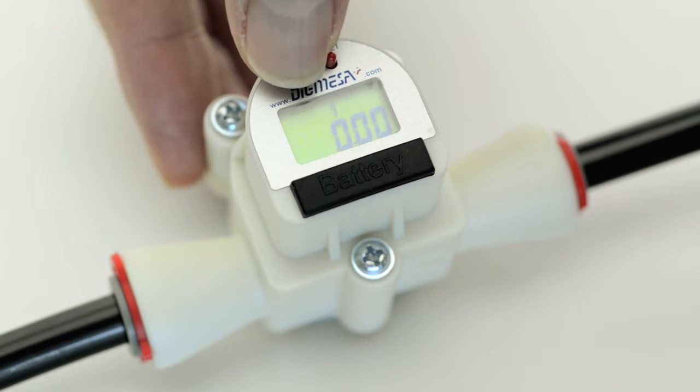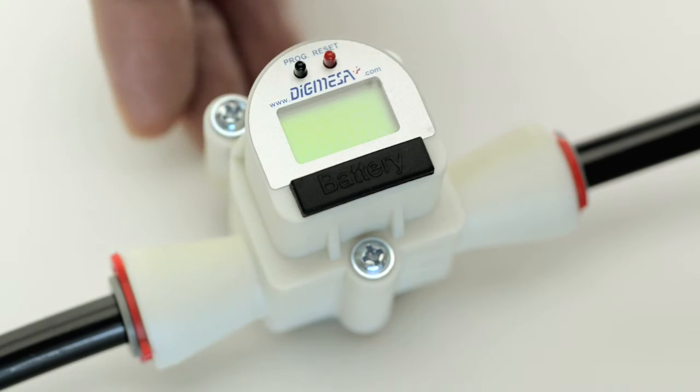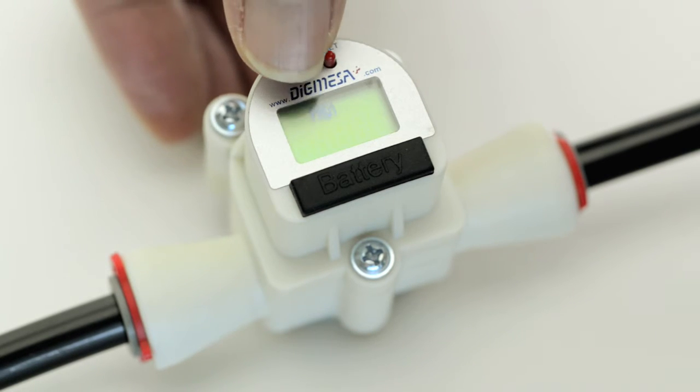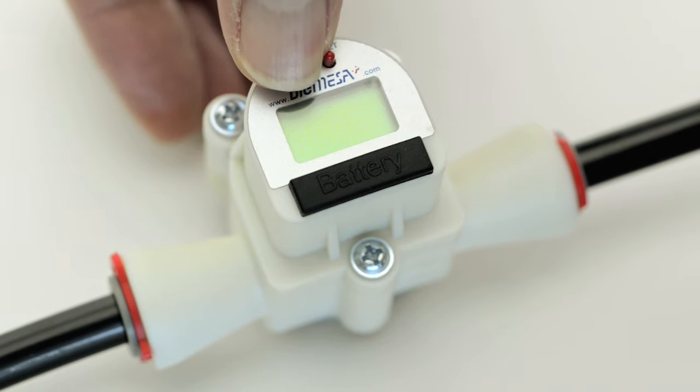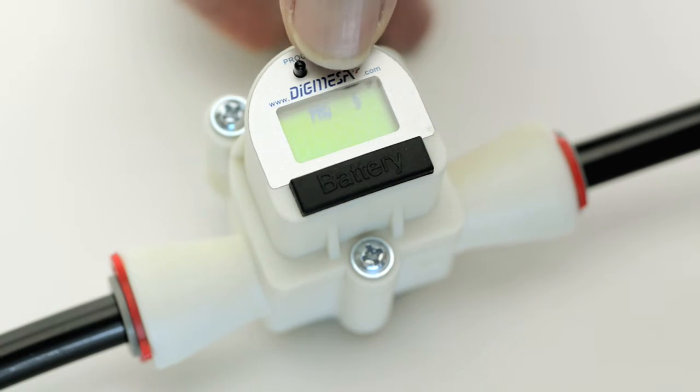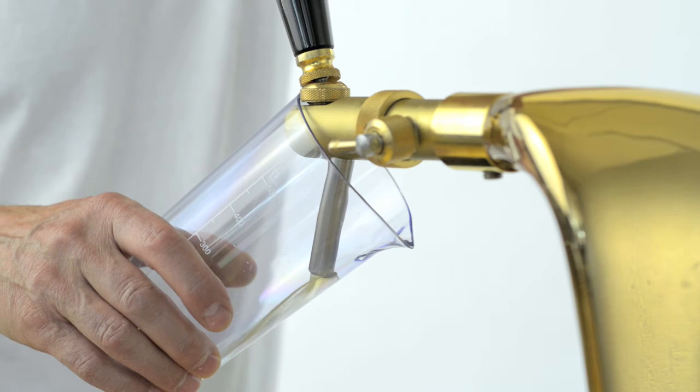Hold the black program pin down until the message PRG flashes on the display, then release it. Now press the black program pin five times in a row until the message PRG5 flashes on the display. Now press the red reset pin once. A hyphen appears on the right. The flow sensor is now ready for automatic calibration.